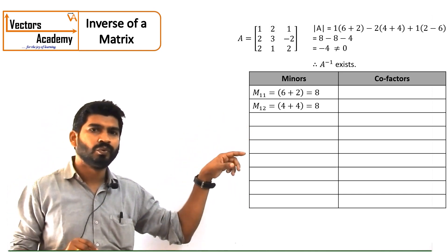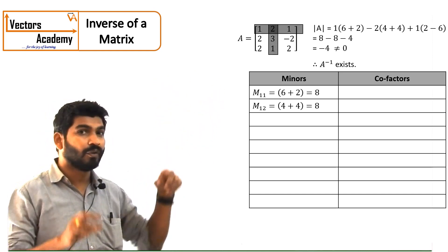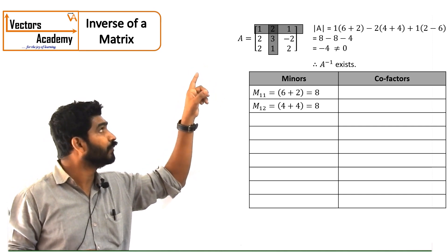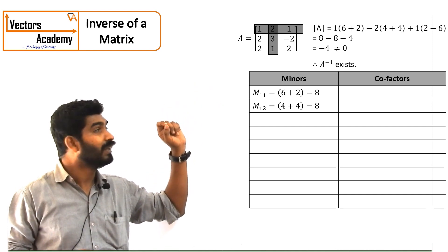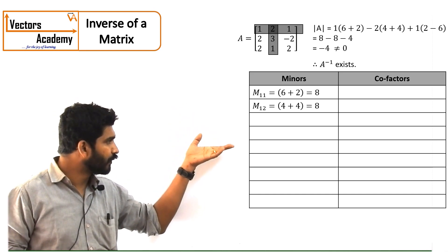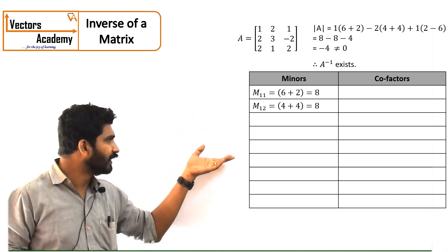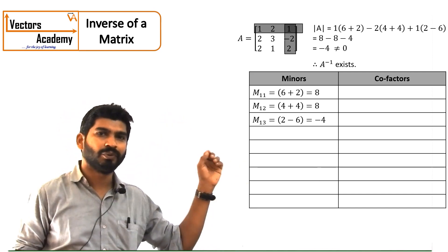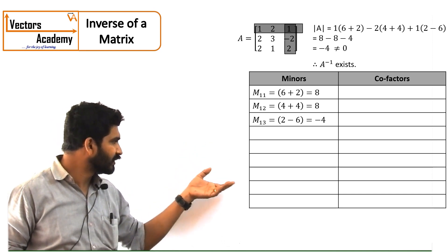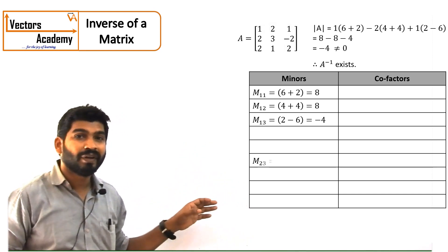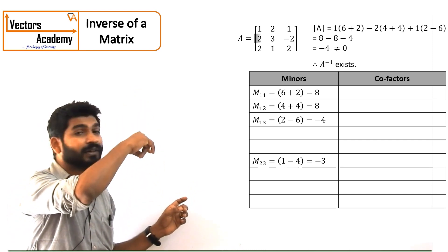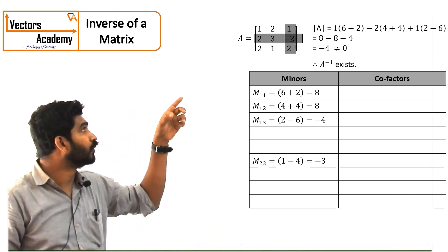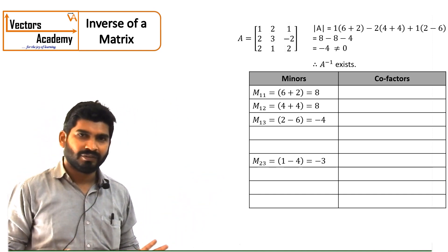Exactly in the same way, for M12 we have to remove the first row and the second column. The elements which are remaining, we take the determinant of those 4 elements, that will give you 4 plus 4, which comes out to be 8. Exactly in the same way, for M13 we remove the first row and the third column; the answer comes out to be 2 minus 6, which gives you minus 4. For a random element like M23, I remove the second row and the third column, and the determinant of the remaining 4 elements gives 1 minus 4, which is minus 3.